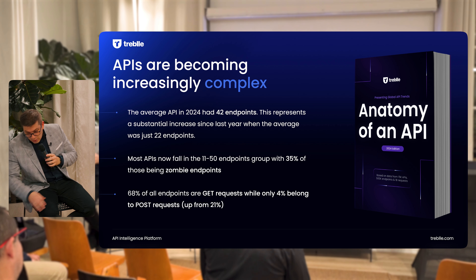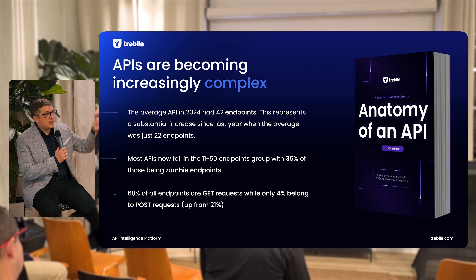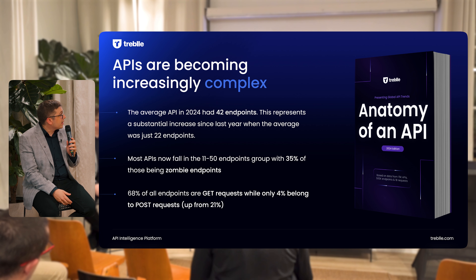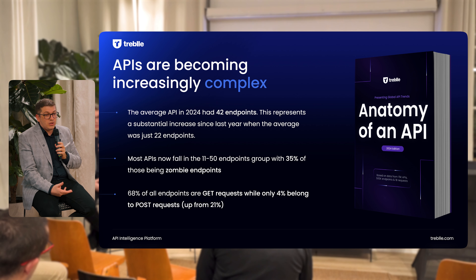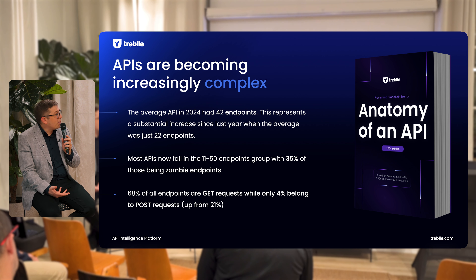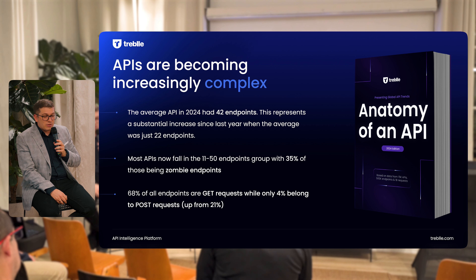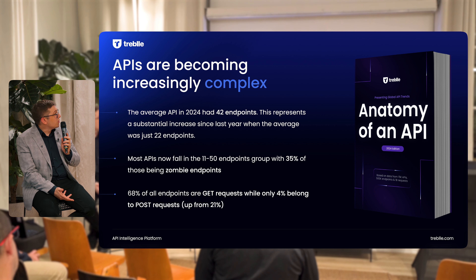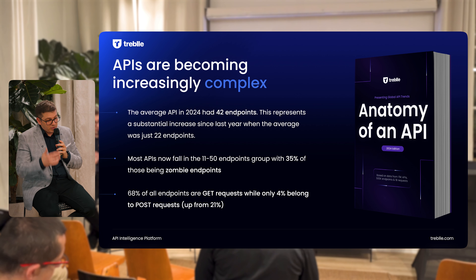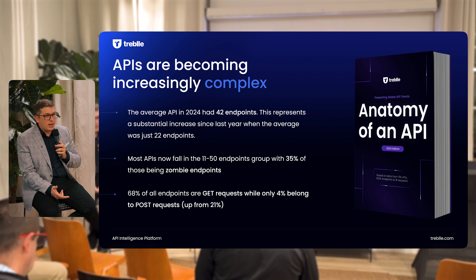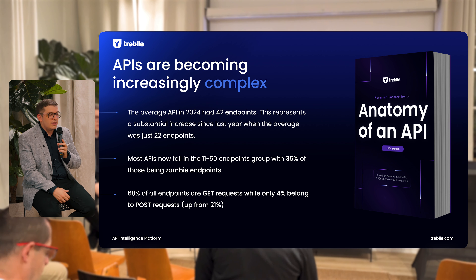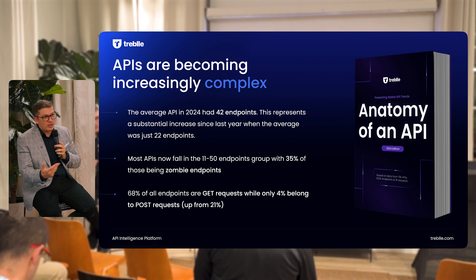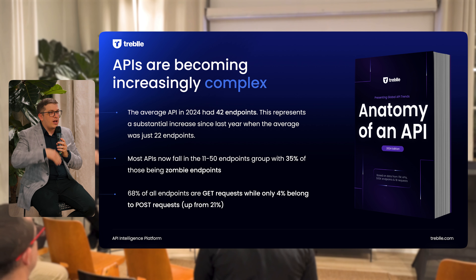The next finding: APIs are in general getting more and more complex. The number one thing we measure to understand where people are is the number of endpoints an average API has. On average, that number was 42 endpoints in 2024, compared to 22 in 2023 — basically almost double the amount of endpoints. The big theme here is around AI and the complexity that AI brings, and the rush to get these APIs talking to an LLM or some sort of AI thing. A lot of them are basically just adding more APIs or adding more endpoints.